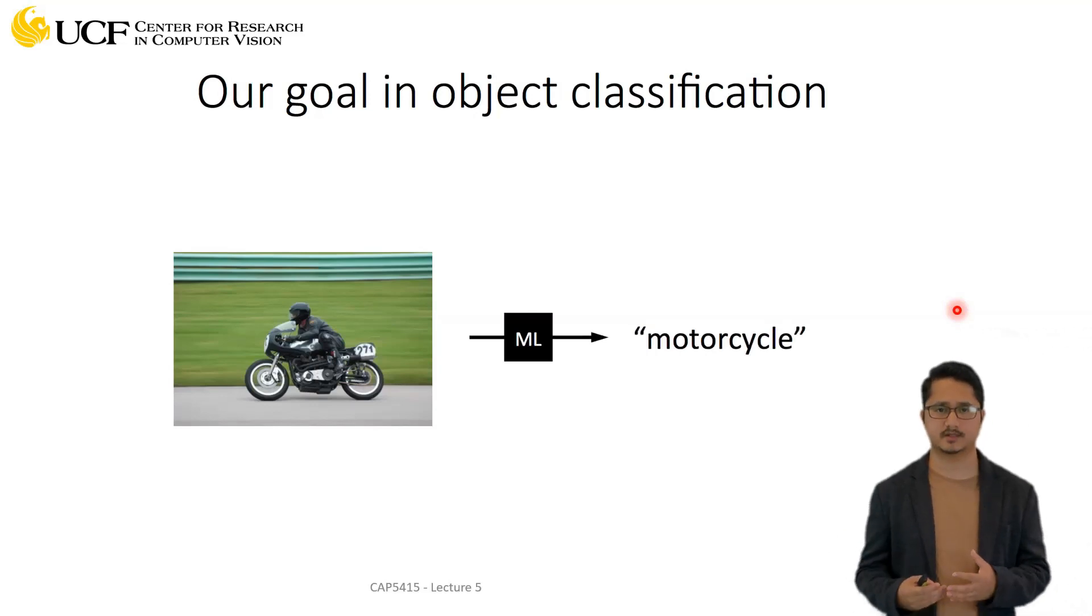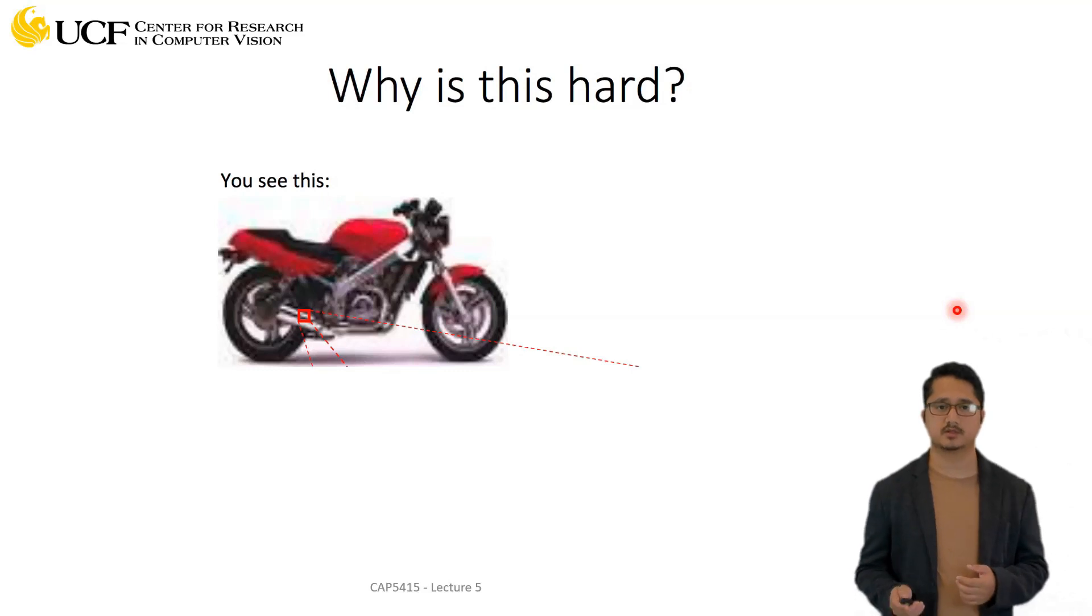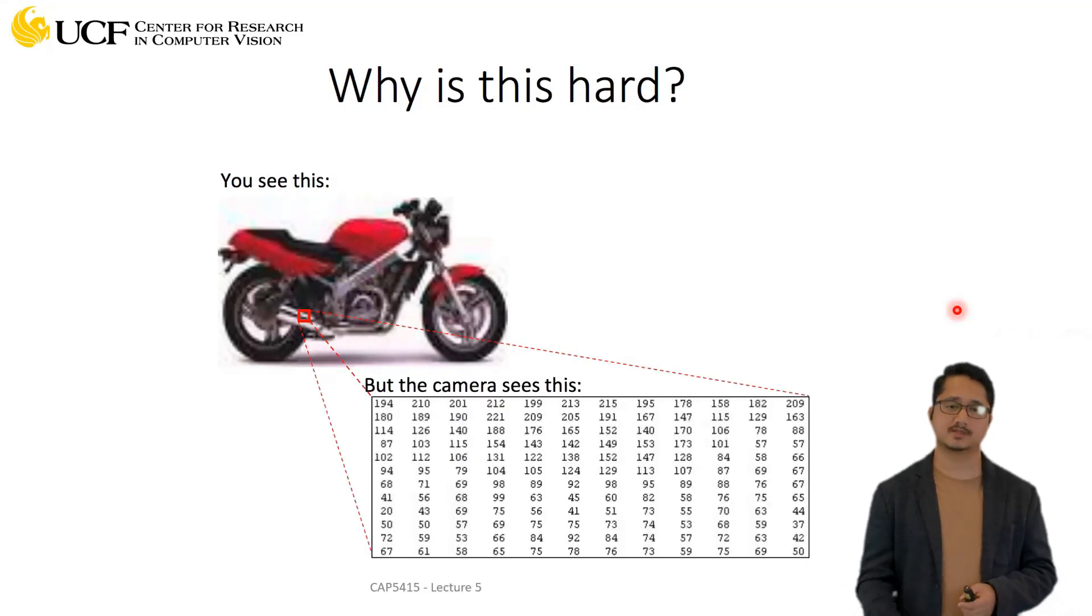This is a very basic image classification problem. Now the problem with these kinds of models - we've seen this before - is that visually we can see it's a motorcycle and it's very easy for us to make these kinds of interpretations. But as we discussed earlier, when computers try to see these images, if you focus on this patch, the camera or the computer sees just a bunch of numbers. Even for us as humans, these numbers are very hard to interpret - there is no way of saying that these numbers are actually coming from a motorcycle or not.